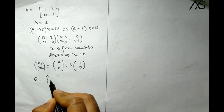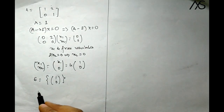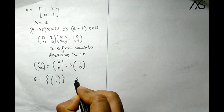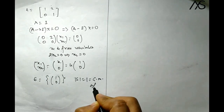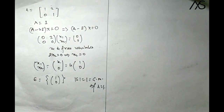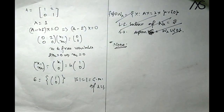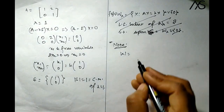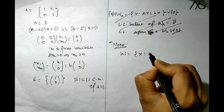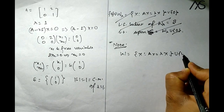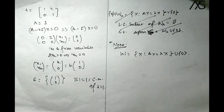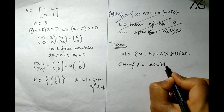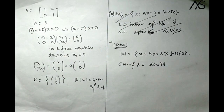Taking the linearly independent set S, which is the collection of eigenvectors, we get S = {[1,0]}, a singleton. So the cardinality of S is 1, which means GM of lambda equals 1 is 1. We can also describe this via a vector space W of all eigenvectors corresponding to lambda, union {0}.